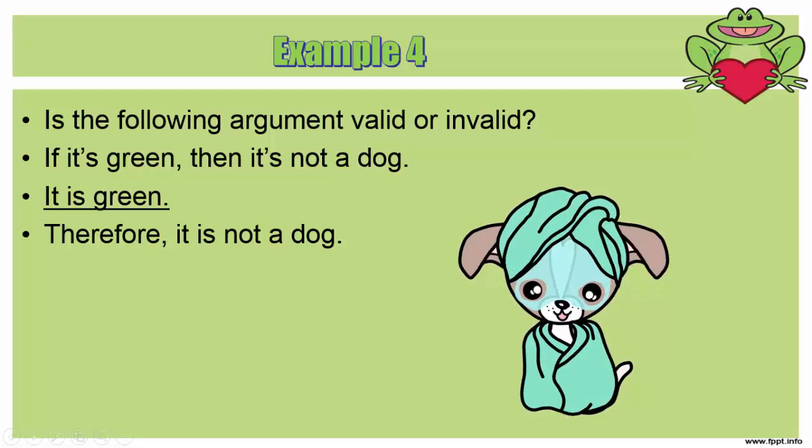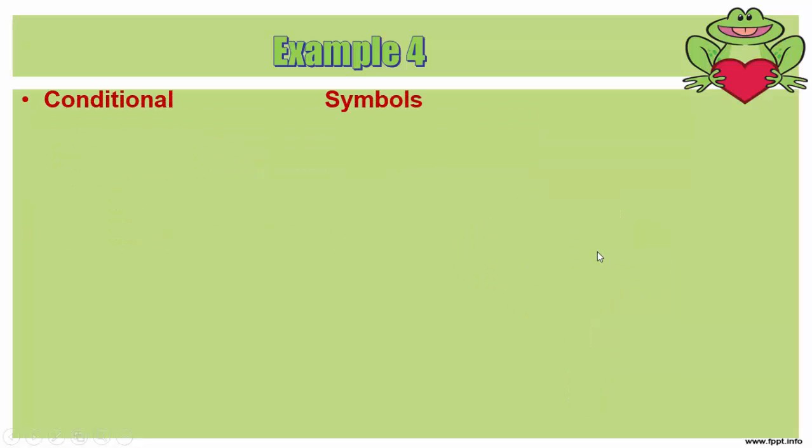Here we're going to look at it in terms of a symbolic logical argument. We're going to have the conditional and the symbols. We start off, if it's green, then it is not a dog.